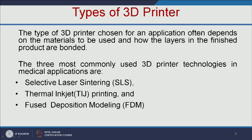Let us see the types of 3D printers. There are three types: the first one is selective laser sintering, the next one is thermal inkjet printing, and the third one is fused deposition modeling. The selection of a 3D printer is based on the material you want to use and also how the layers in the finished product are bonded.